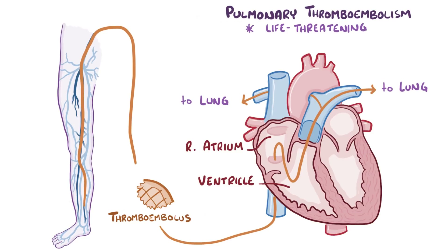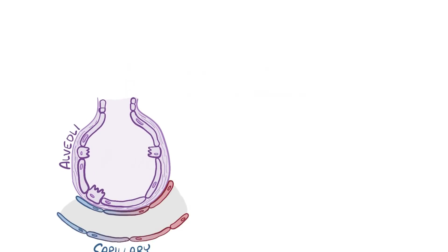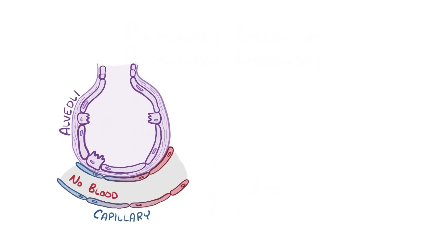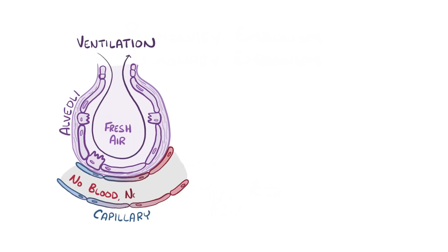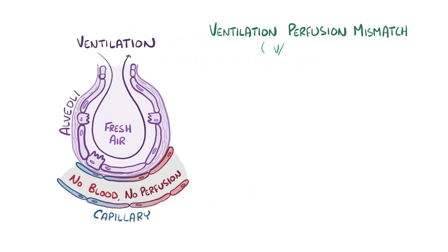This is a life-threatening situation because it literally blocks blood from getting into the lungs to pick up oxygen. If there's no blood flowing past an alveolus, then that means there are alveoli that are getting ventilated with fresh air but not getting perfused with blood. We call this a ventilation-perfusion mismatch, or a VQ mismatch. The body needs oxygenated blood to function and can therefore only tolerate a bit of VQ mismatch before the lungs are no longer able to meet the needs of the body.